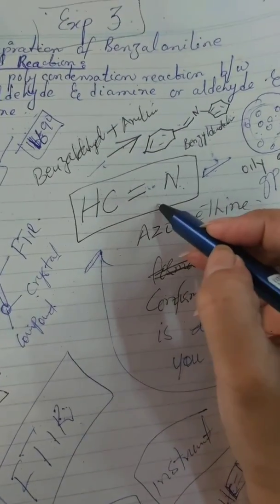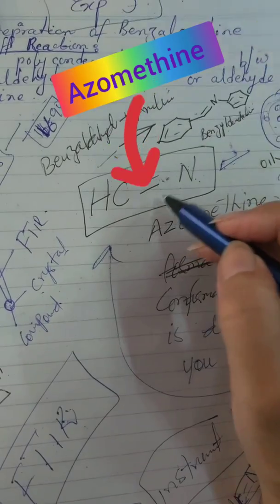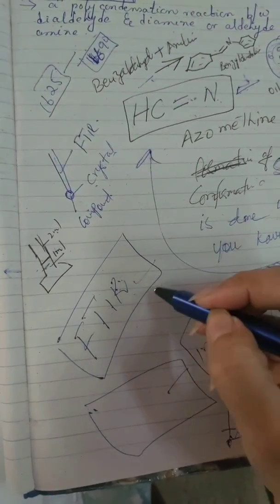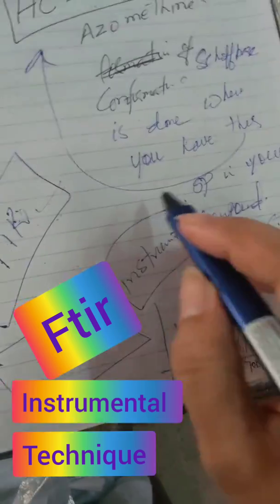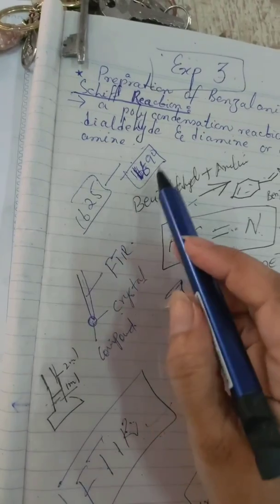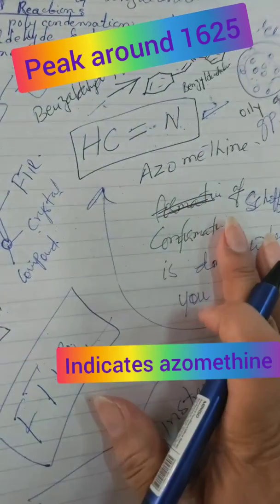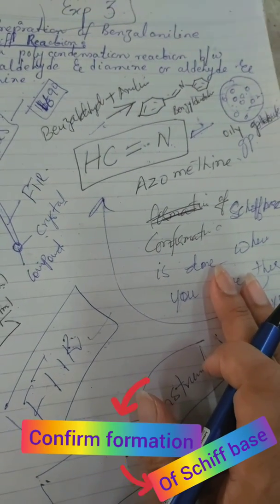To find out whether the azomethine group is present, after the whole reaction process they need to go through a technique called FTIR spectroscopy — that is Fourier Transform Infrared Spectroscopy. After recording the melting point and recrystallization, they will go for FTIR. With the help of FTIR they can detect the peak at around 1600 to 1625, or up to 1690 cm⁻¹, and that peak confirms the formation of the azomethine group and the presence of a Schiff base.